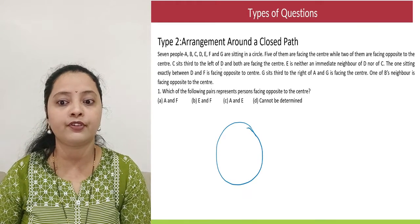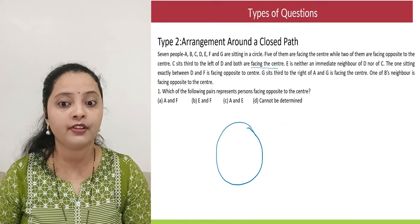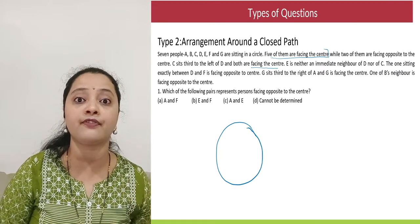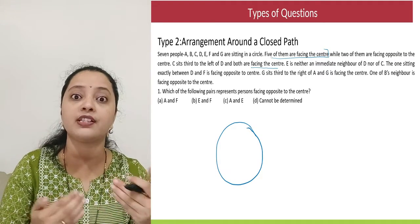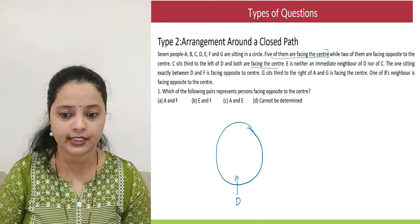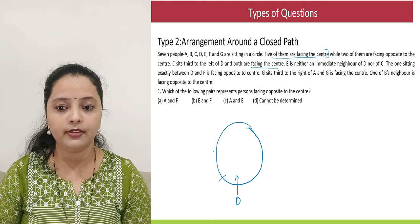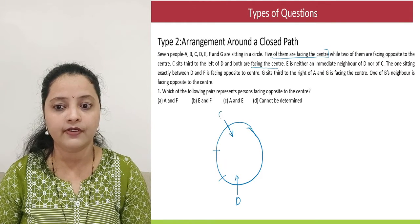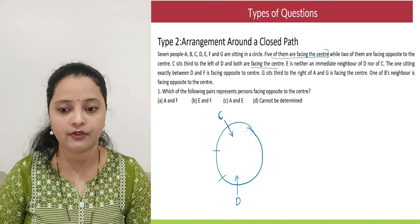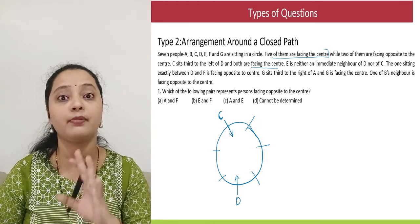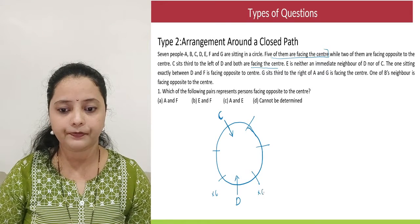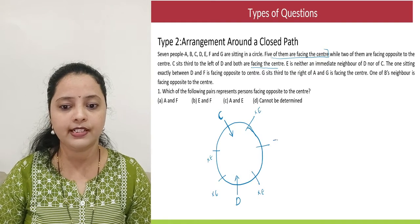There are seven people A to G sitting around a circle, and five of the seven are facing the center — meaning two are facing away from the center. This is a mixed-direction question. First clue: C sits third to the left of D, and both are facing the center. Let's say this is D; counting third to the left — one, two, three — this place is C, also facing the center. With four people placed and seven total, three positions remain. E is not an immediate neighbor of D or C, so E goes to the position opposite, leaving the adjacent spots free.